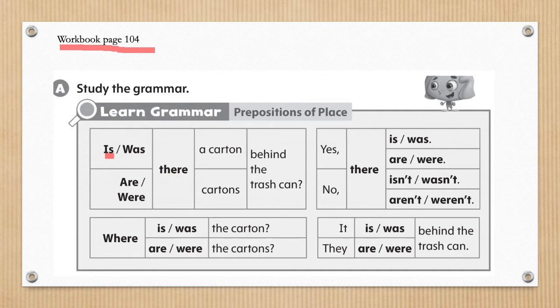We use ARE or WERE if it is plural. Remember students, that plural is two or more and usually has an S to help us remember that it is plural. So, an example of this is, are there cartons behind the trash can? Or, for the past tense, were there cartons behind the trash can?